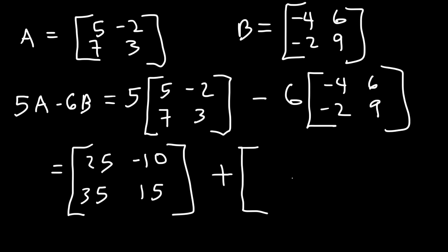And then let's put a plus sign and multiply everything in this matrix by negative 6. So negative 6 times negative 4 is positive 24. Negative 6 times 6 is negative 36. Negative 6 times negative 2 is 12. And negative 6 times 9, that's going to be negative 54.